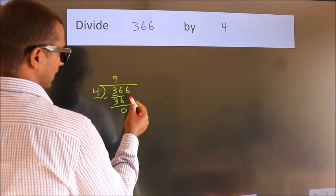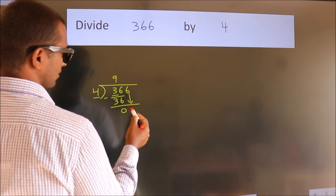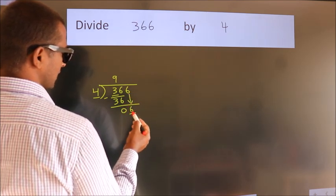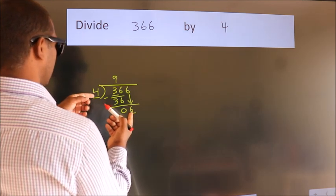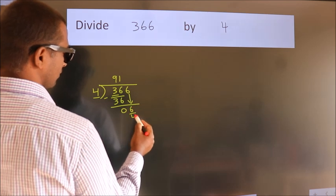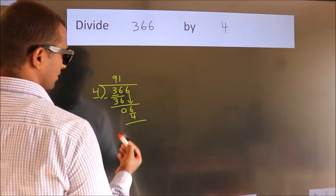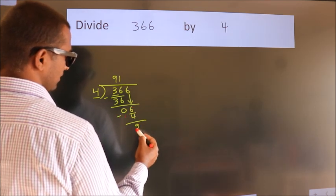After this, bring down the next number. So, 6 down. A number close to 6 in the 4 table is 4 times 1, which is 4. Now we subtract and get 2.